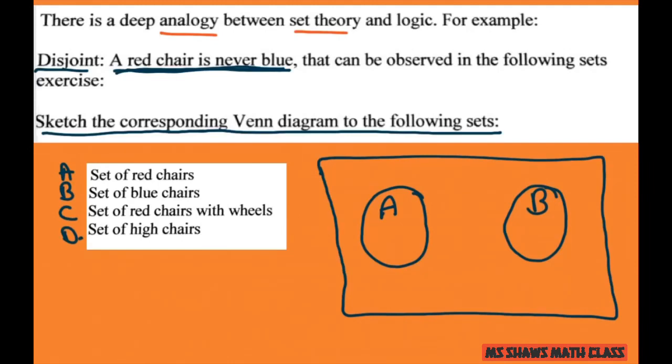All right. Set of red chairs with wheels - well, that's a subset of the red chairs, so that's inside the set of A. So that's your C.